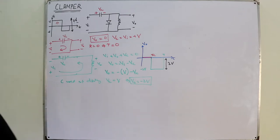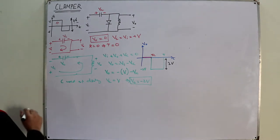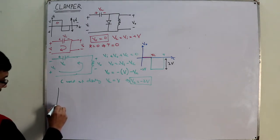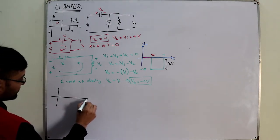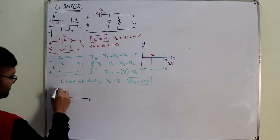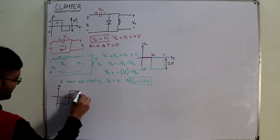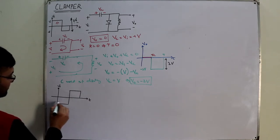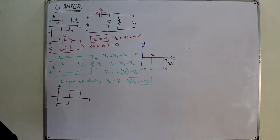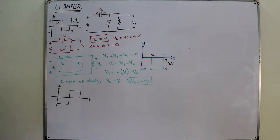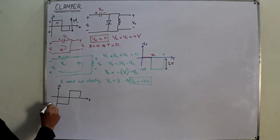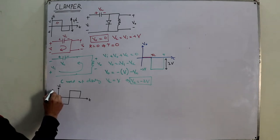Example number 2. Let's make the question a little more involved. My input is a repeating waveform — this is minus V and this is plus V.